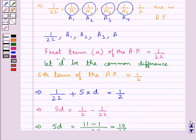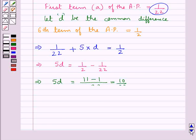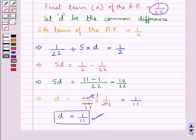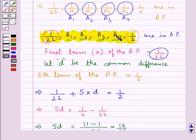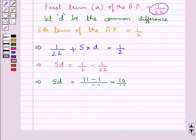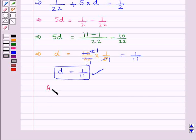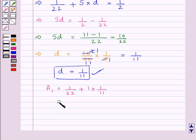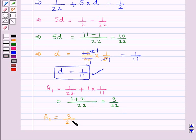Since we have the first term of the AP and now the common difference D, we can easily find out the terms A1, A2, A3, and A4. A1 is the second term of the AP. So A1 = 1/22 + (2 minus 1) × (1/11). Taking 22 as LCM, we have 1 + 2, which is equal to 3/22. Thus A1, the second term of the AP, is 3/22.